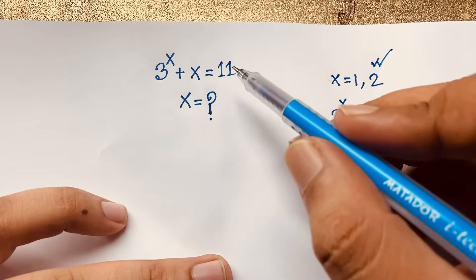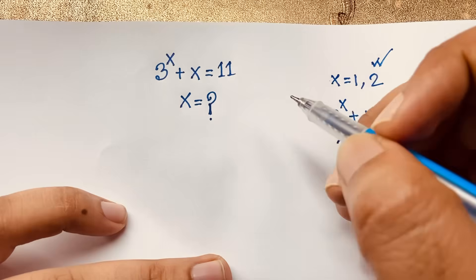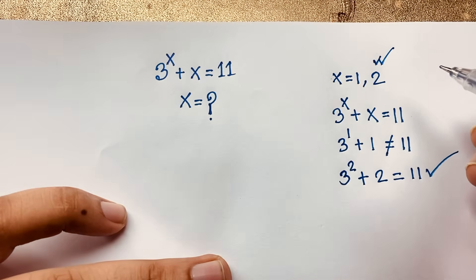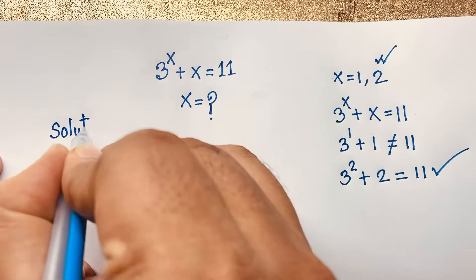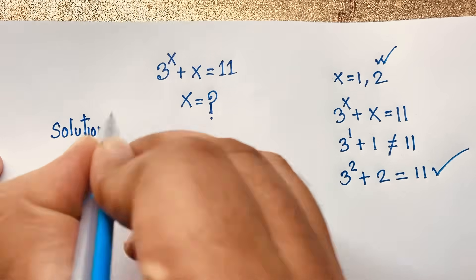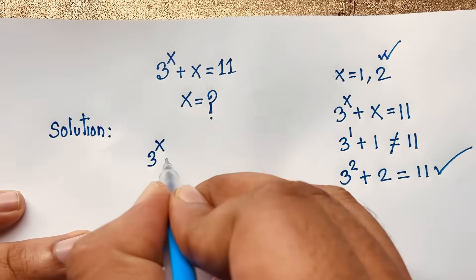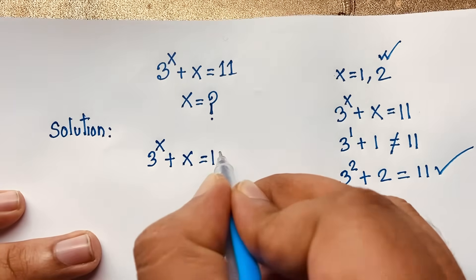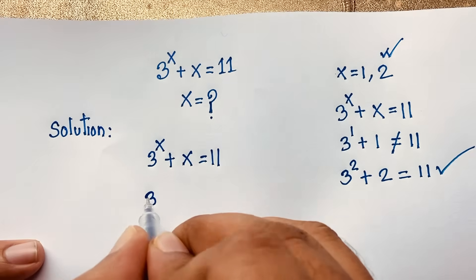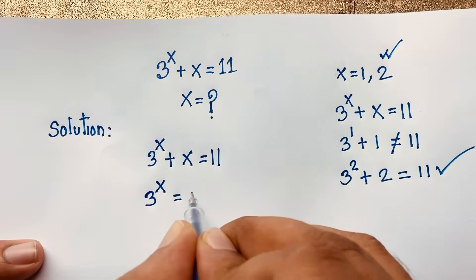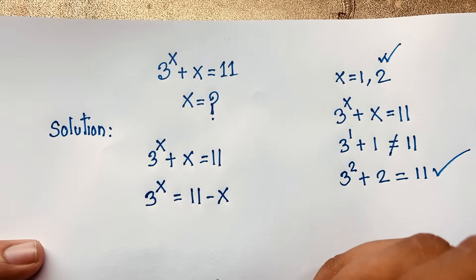But how to solve and calculate this question? 3 to the power x plus x is equal to 11 — x is equal to what? Let's find the solution. Our question: 3 to the power x plus x is equal to 11. Now you can see 3 to the power x is equal to 11 minus x. I just move this x to the other side, making it negative x.